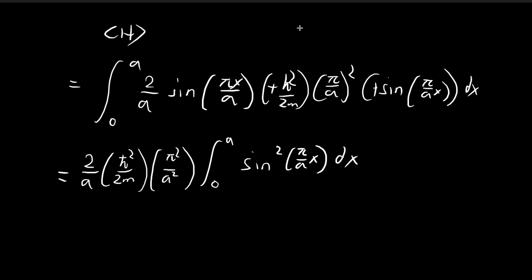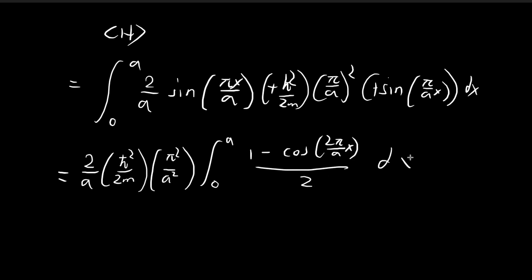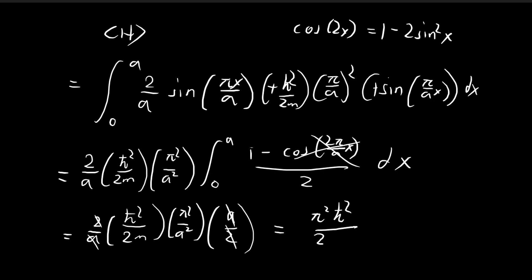Evaluating the integral of sine²(πx/a) is straightforward using the double-angle formula: sine² becomes (1 − cos(2πx/a))/2. Integrating from 0 to a, the constant term 1/2 integrates to a/2. Integrating the cosine term gives a sine term; substituting x=a gives sine(2π)=0 and substituting x=0 gives sine(0)=0, so that term vanishes. The integral equals a/2, which cancels nicely with the remaining factors, giving π²ℏ²/2ma² — exactly what we expected. This confirms our answer is π²ℏ²/2ma².